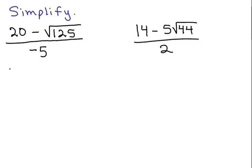For this first one, we have 20 minus the square root of 125. Now you can figure that out on scratch paper or I'm going to just write down what that would be. This is 5 times 25, that's 125. So this is going to be 25 times 5.